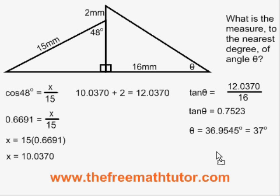We simplify and we get theta equals 36.9545 degrees if rounded to four decimal places. But the question is asking us to round it to the nearest degree, so our final answer is angle theta equals 37 degrees.